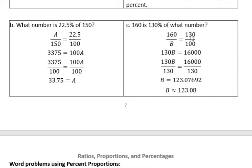If I multiply 130 times B and 160 times 100, I get my equation. And now I'm going to divide both sides of that equation by 130 because that's the coefficient in this problem. Dividing both sides by 130, I get B equals this number.